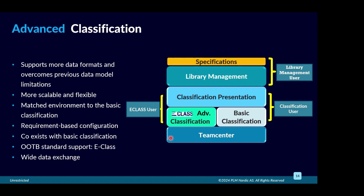E-class defines the standard — just like other standards — for a worldwide definition and hierarchy of parts and attributes. It has predefined hierarchy and attributes, so when both companies are aware of e-class, it is very easy to interpret the data. It also makes it easy to integrate with other systems like ERP, providing a common format. E-class standard is included in advanced classification as an add-on module.